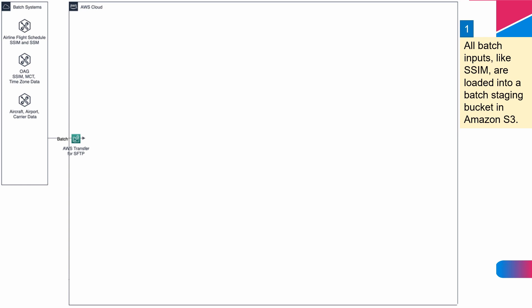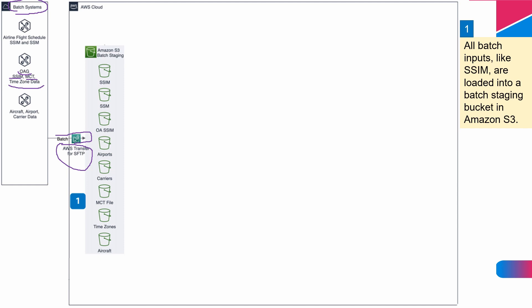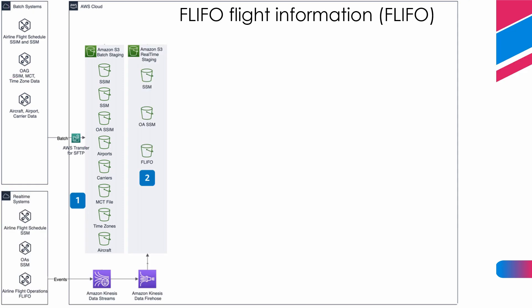As we know from the block diagram shown before, OAG and Innovata provide the service of sharing data on schedules, using the SSIM standard defined by IATA. Airports share MCT — minimum connection time — data, and airlines include time zone data, etc. All this data should be fetched as batch processing, for example once a day. We can use SFTP, SSH, or any other method for fetching. All batch inputs like SSIM are loaded into a batch staging bucket in Amazon S3.